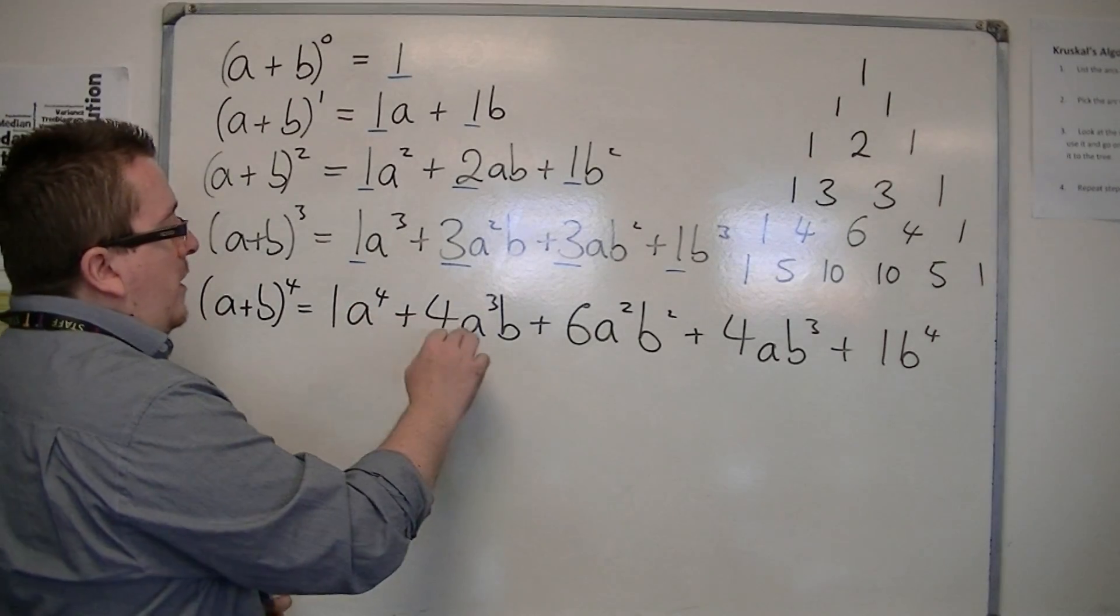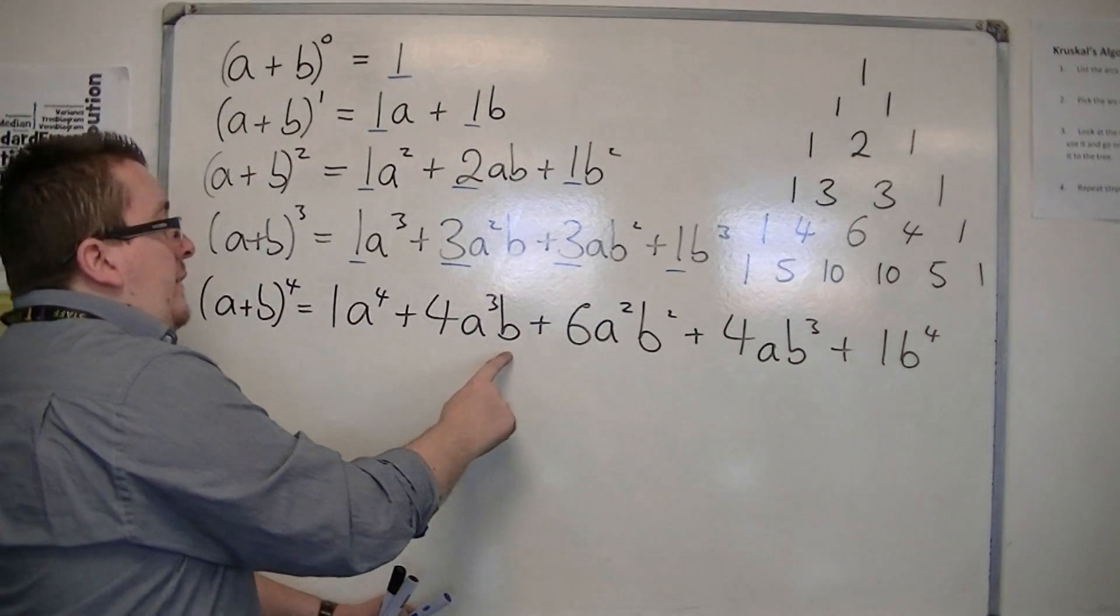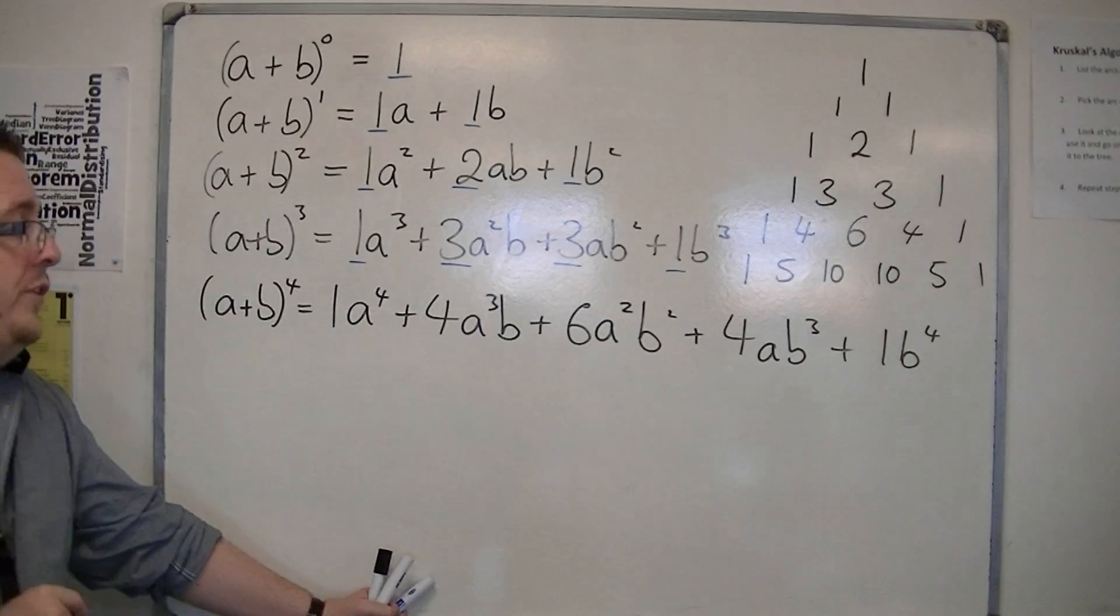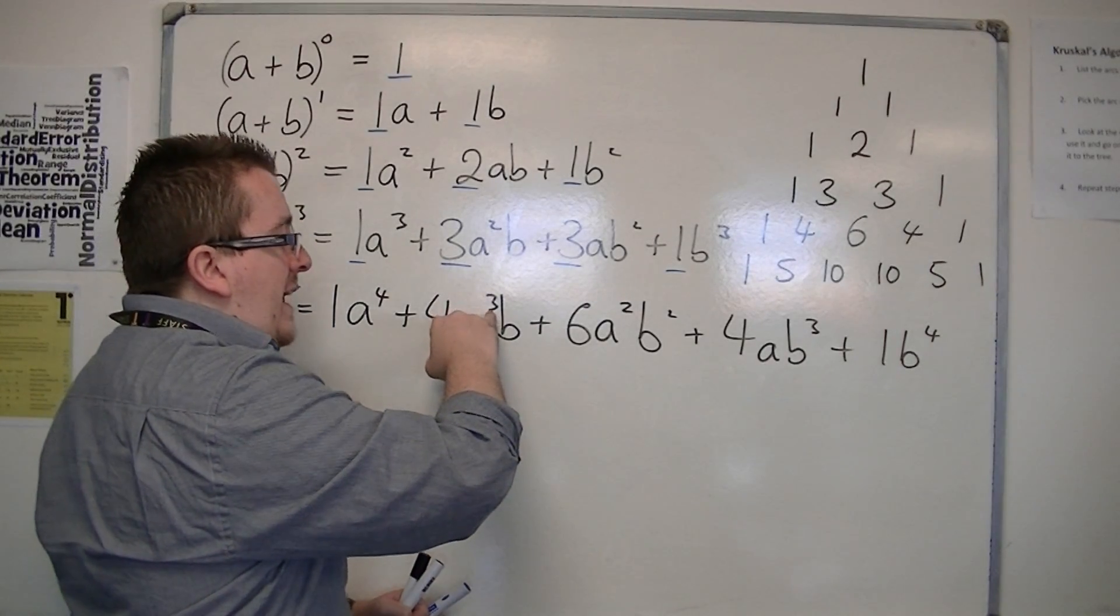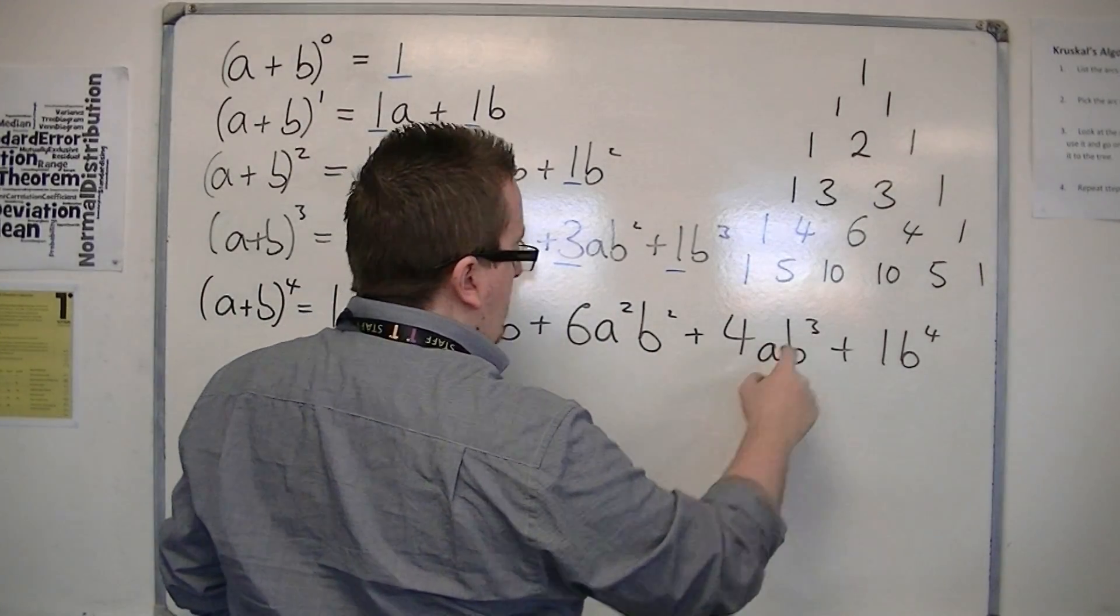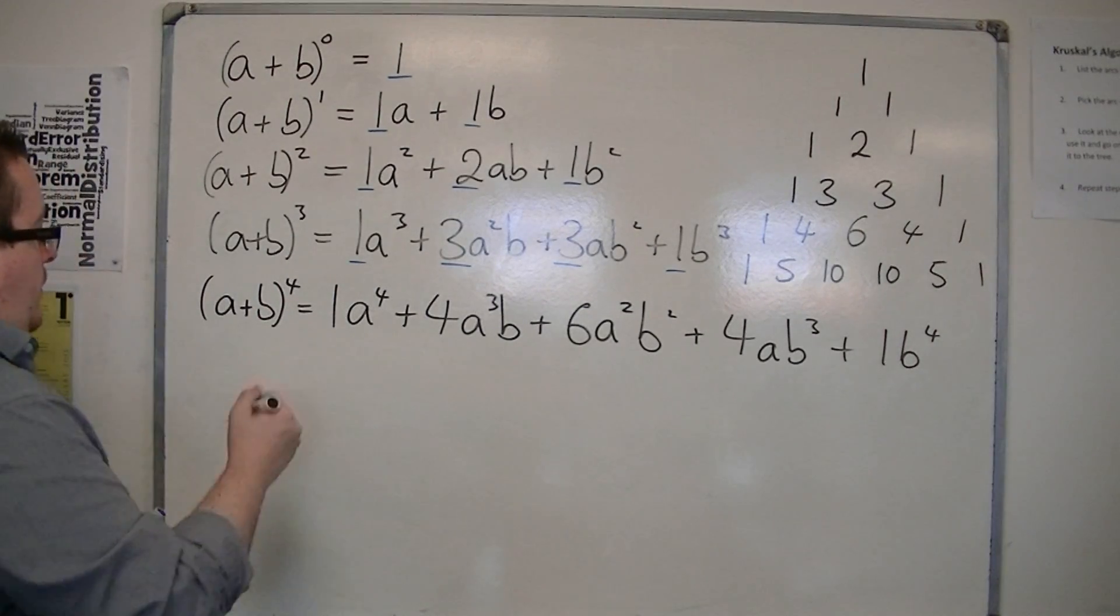The a's are decreasing in power, and the b's are increasing in power. Also, at each term, the powers of a and b—3 and 1, 2 and 2, 1 and 3—add up to 4.